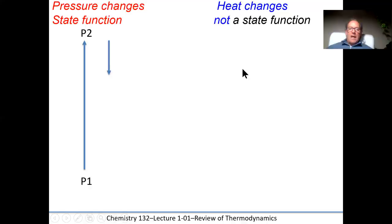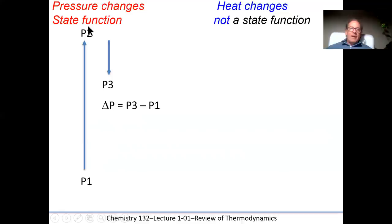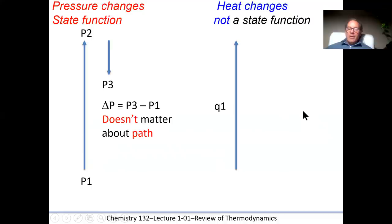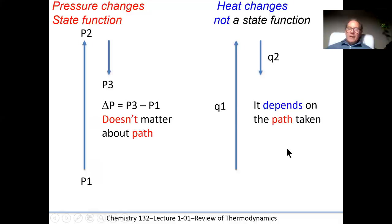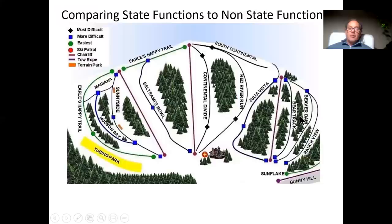If we go from pressure state P1 to P2 and then to P3, the change in pressure is whatever you ended with minus whatever you started with — it doesn't matter that we went to a different pressure at P2. It's independent of the path. When we talk about heat, however, heat is dependent on the path. If we use a certain amount of heat to get from one state to another and then another quantity for another change, we cannot simply calculate delta Q — we would have to add up both quantities of heat. Each step involved heat, so the total heat is the sum of those two.